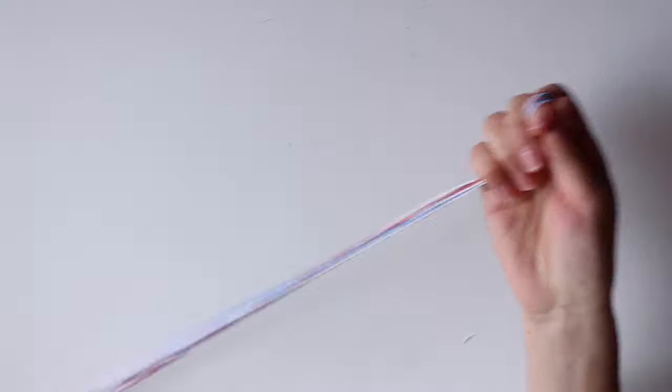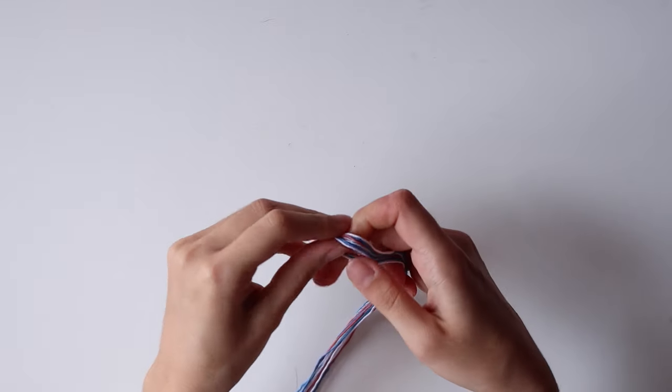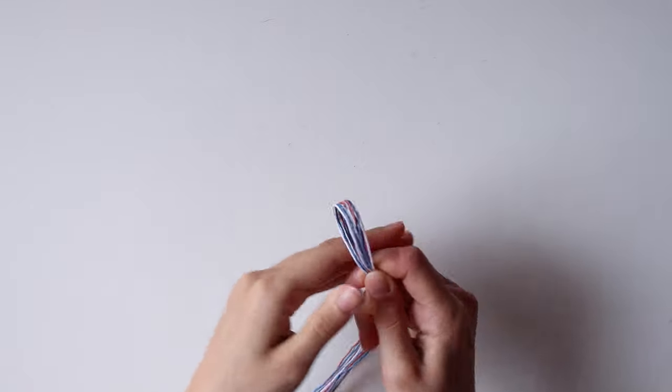Fold the cords in half and make a knot, creating a loop big enough to put a wooden bead through.